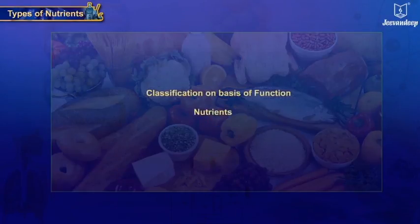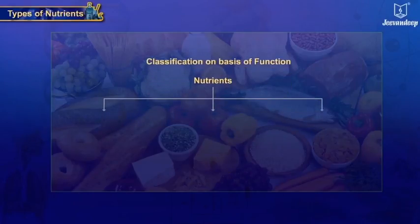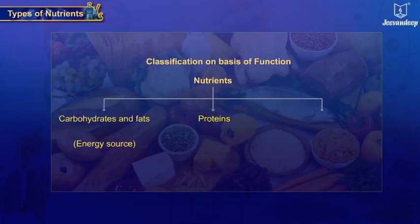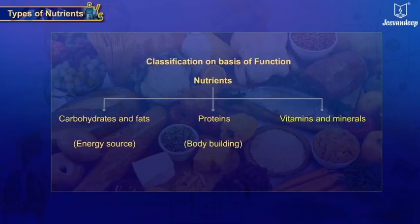Nutrients are classified into three types based on their functions: one, carbohydrates and fats — function: energy source; two, proteins — function: bodybuilding; and three, vitamins and minerals — function: protective and regulating.